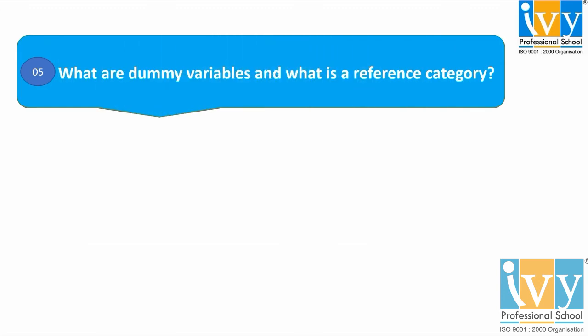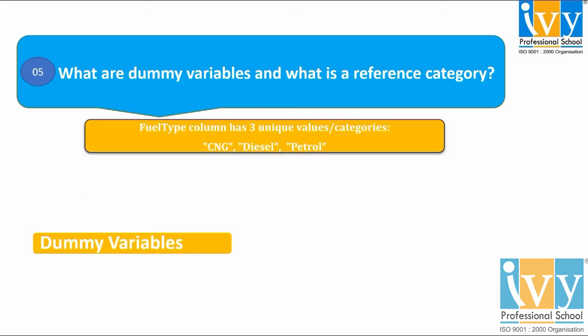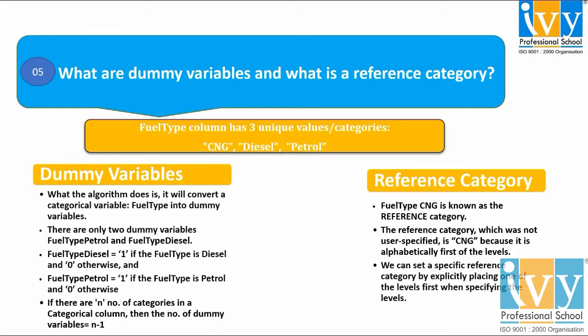The last question asks: what are dummy variables and what is a reference category? Consider an example with three unique values for the fuel type column: CNG, diesel, and petrol. The algorithm converts the categorical variable fuel type into dummy variables. There are only two dummy variables created: fuel type petrol and fuel type diesel.